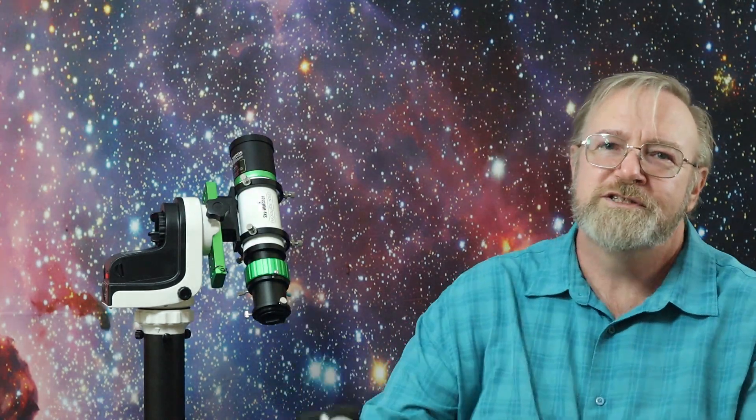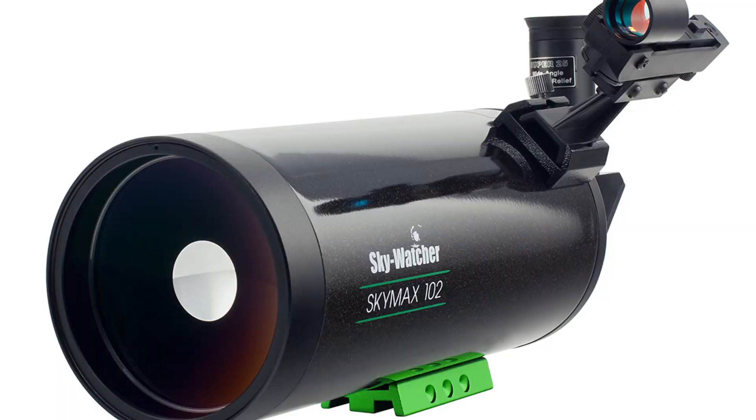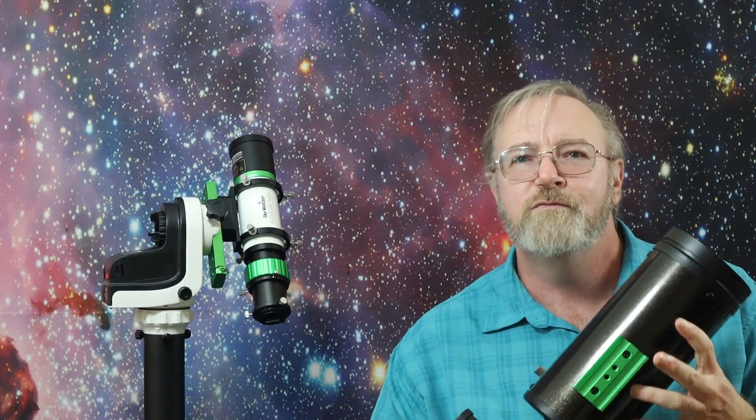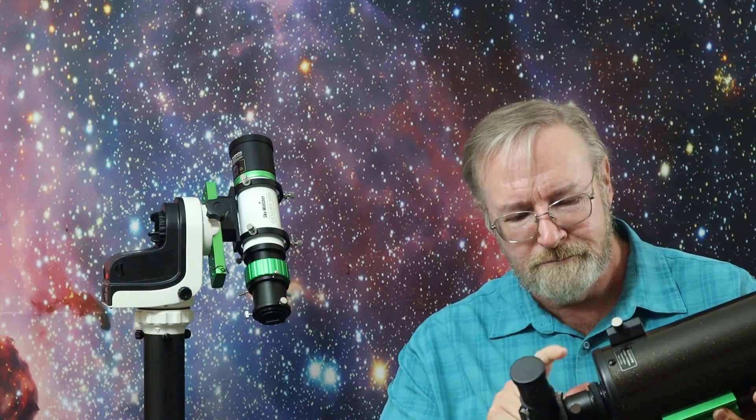And our third scope is the Skywatcher Skymax 102. This one we have because it came free with one of the AZ-GTI mounts that I bought off of Amazon, but it's still a nice little scope. And I think it'll be great for lunar and planetary imaging. It's 102mm, it's 1300mm focal length, making it an F12.7. Has an aluminum tube.